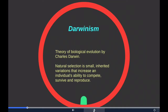The concept describes natural selection as analogous to artificial selection — the process by which animals and plants with traits considered desirable by human breeders are systematically favored for reproduction.